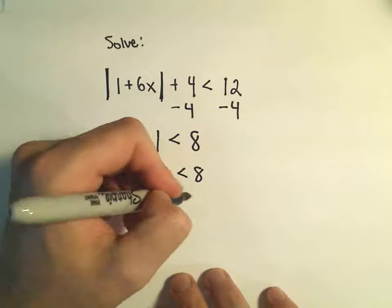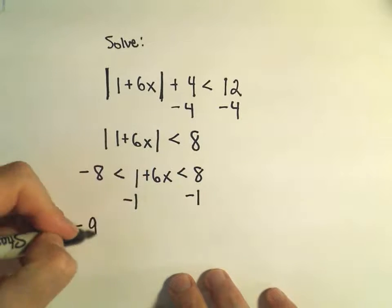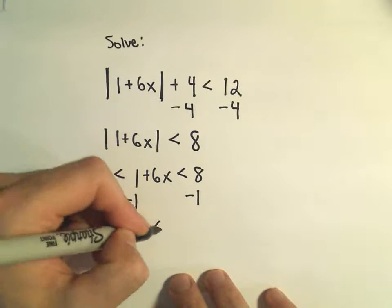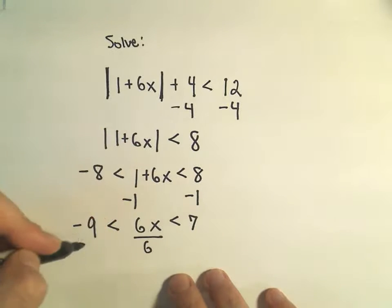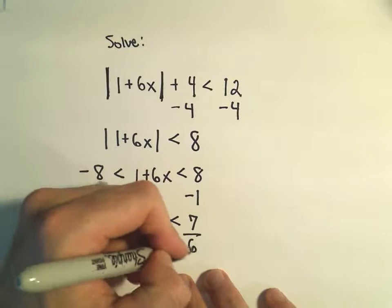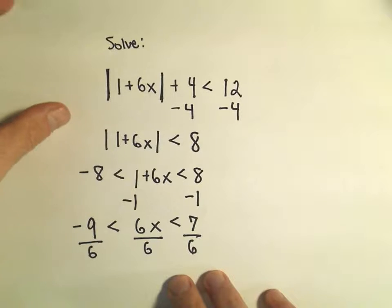So to solve I can simply subtract 1 from both sides. I'll get negative 9 is less than 6x is less than 7. And now I can simply divide everything by 6 and I'll get a solution here.